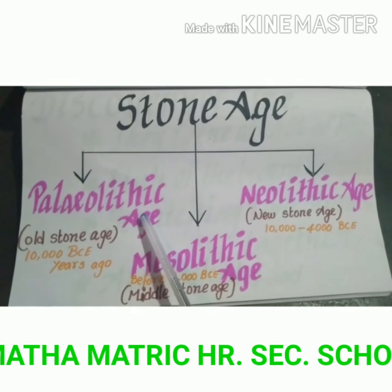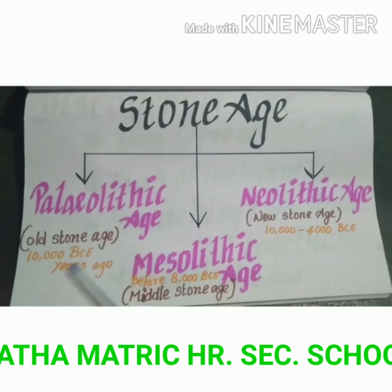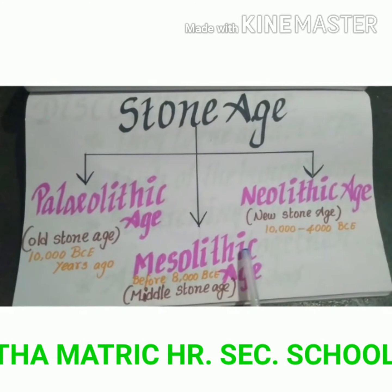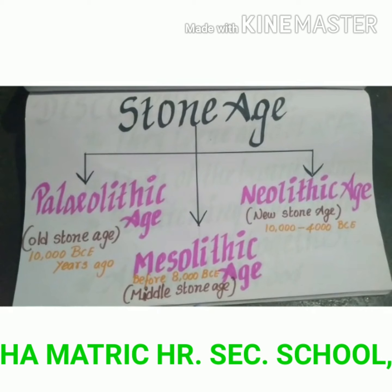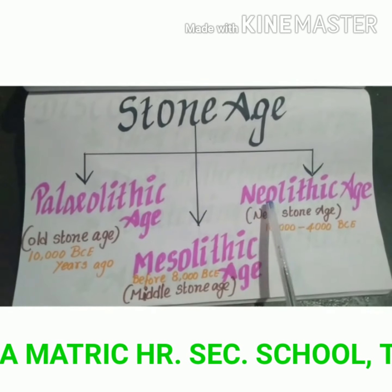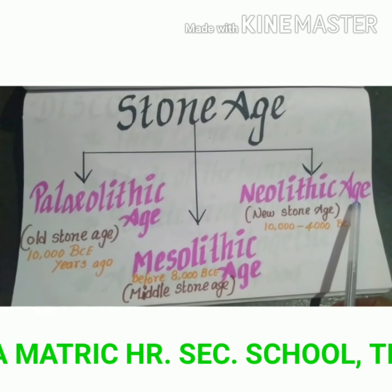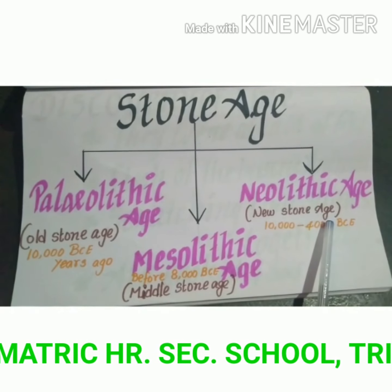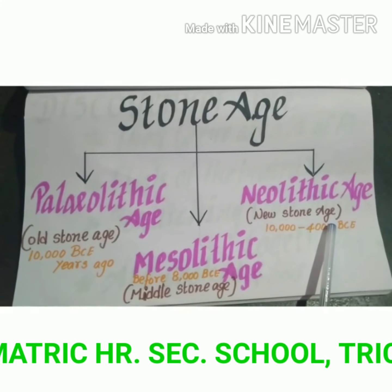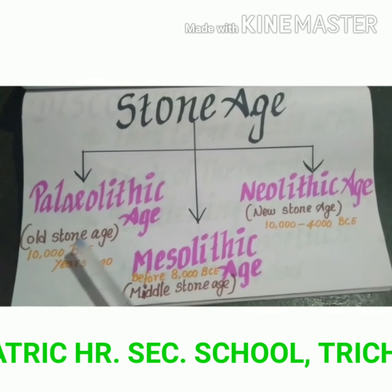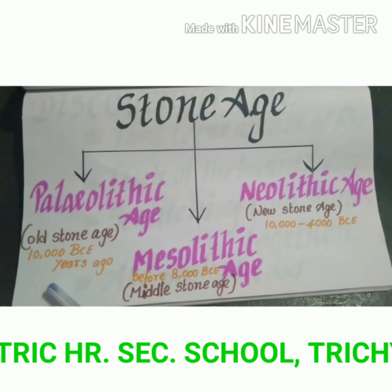Paleolithic Age — Old Stone Age. Mesolithic Age — Middle Stone Age. Neolithic Age — New Stone Age. The Paleolithic Age dates to around 10,000 B.C.